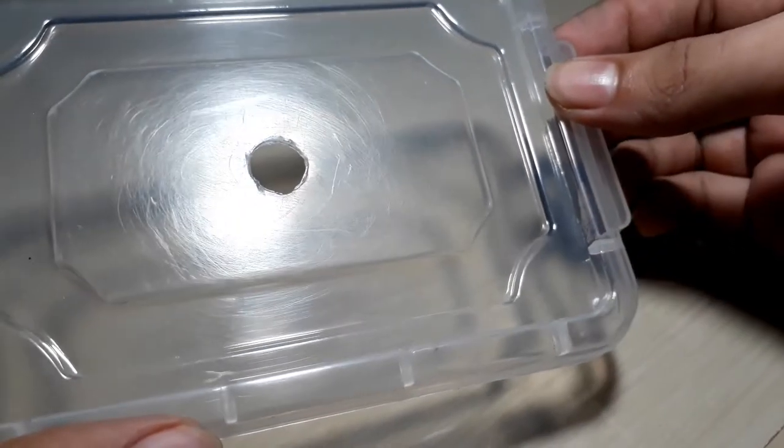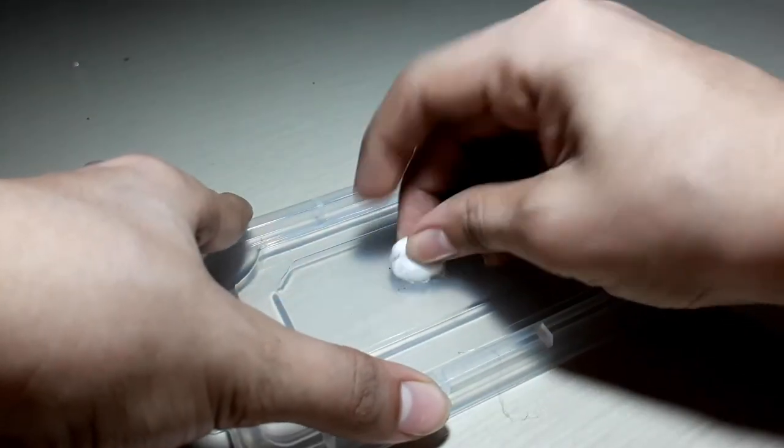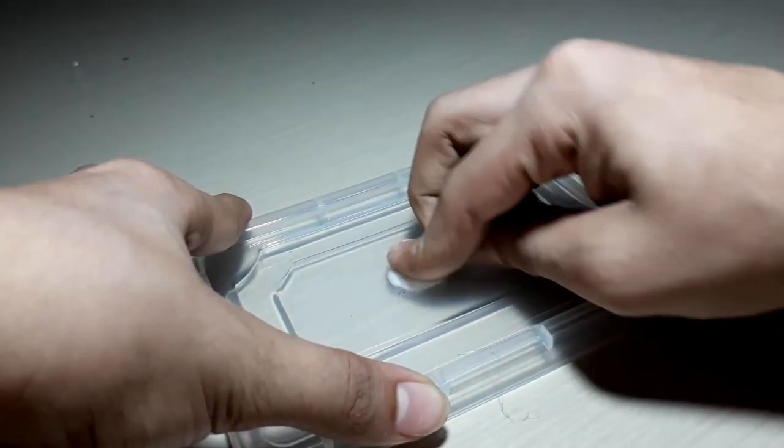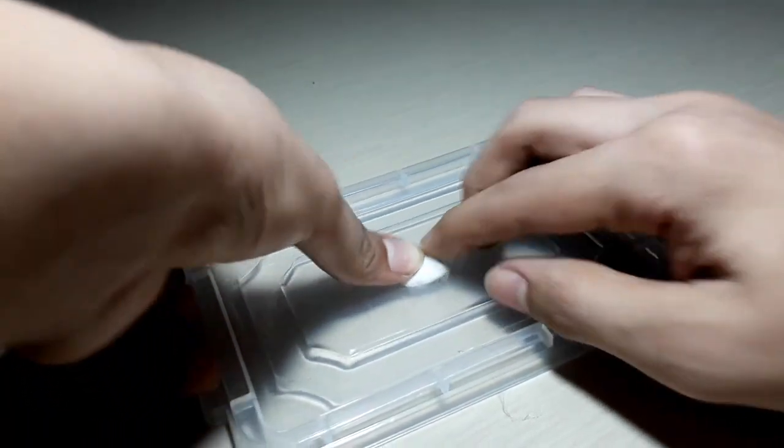If you're keeping small ant species, I recommend sealing the hole with cotton. This will provide the ants ventilation while preventing them from escaping. Or as an alternative, you could use some fine mesh and stick it over the hole.